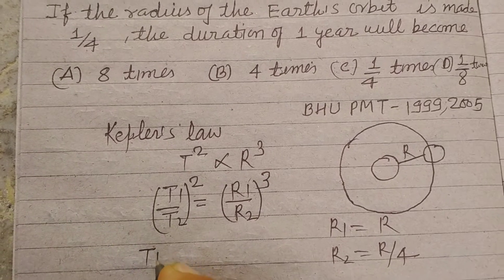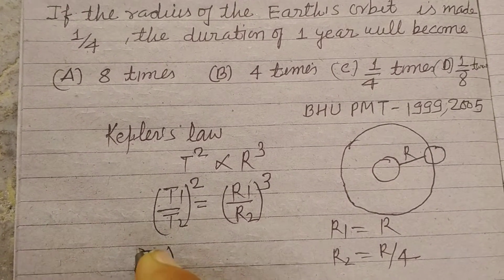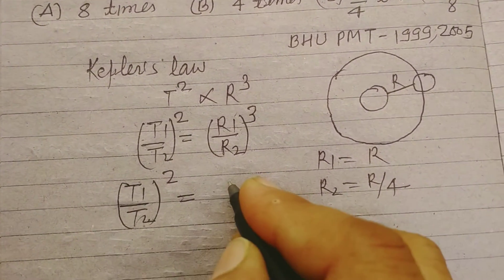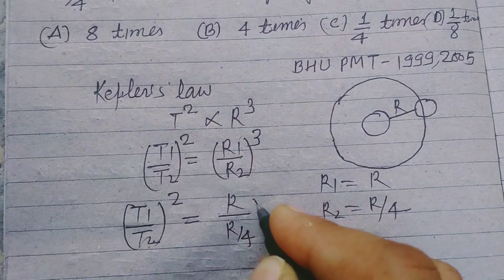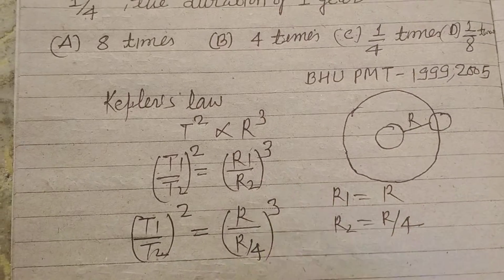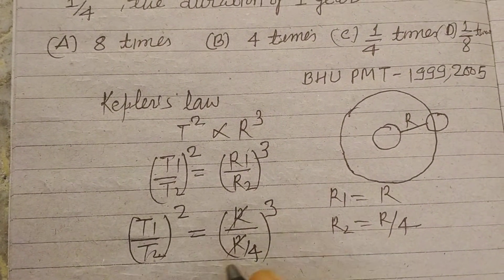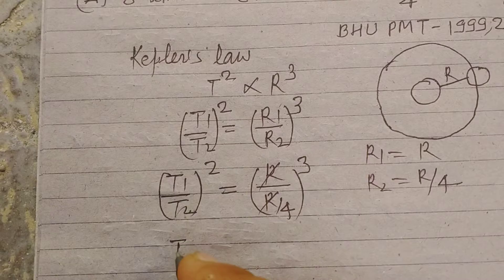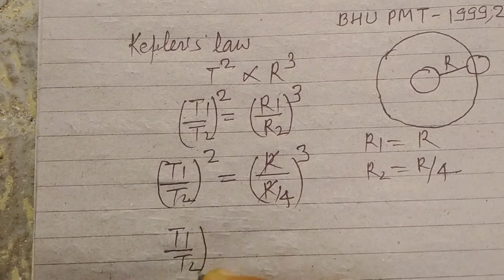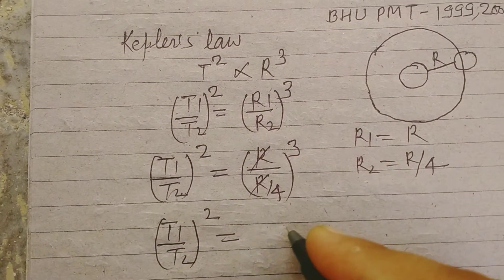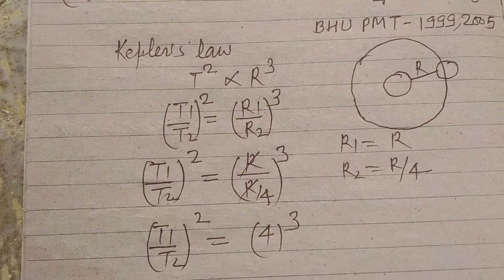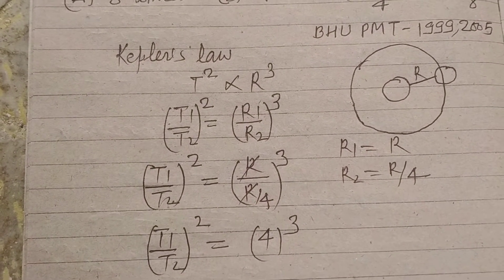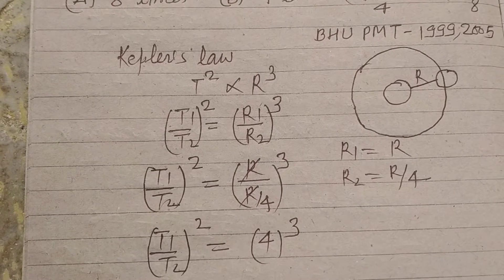So T1 upon T2 whole square equal to R1 is R and R2 is R/4 whole cube. So R are cancelled and we got T1 upon T2 whole square equal to 4 to the power 3.